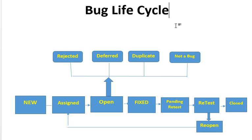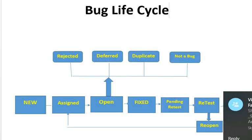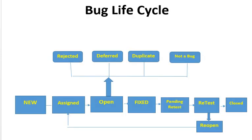The bug lifecycle is the sequence of phases which a bug goes through from its identification to its closure. This lifecycle ensures that the fix resolves the bug and also tracks it to closure.